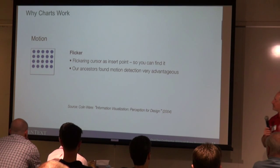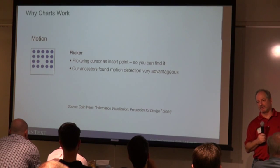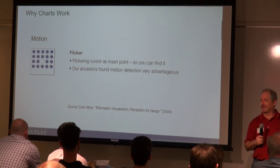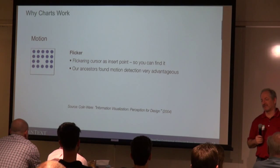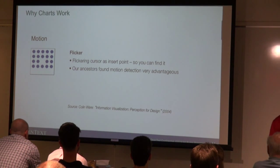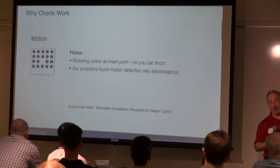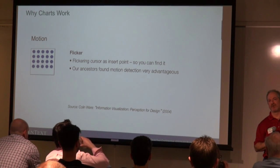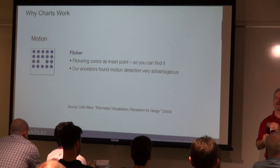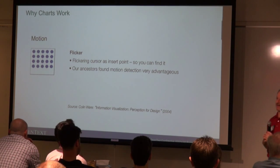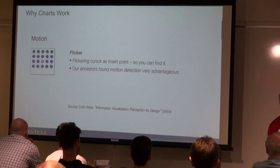And then motion — it could be a flicker, it could be anything — is not very applicable to charts, but very applicable to our ancestors who were hunters. They'd see something flicker in their range of sight and either go the other way or towards it. There are some motion charts that are okay to use, like a chart over time with moving bubbles or moving lines to show growth. But in general, motion is really not applicable to charts.